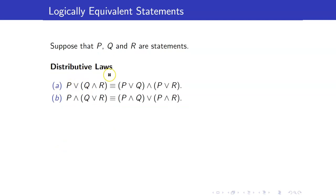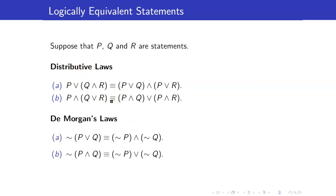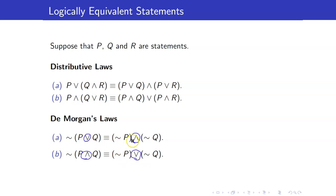We also have distributive laws, where conjunction distributes over disjunction and vice versa, analogous to multiplication and addition. Next, we have De Morgan's laws, which are very useful because they tell us how to negate a disjunction and a conjunction. To negate a disjunction, distribute the negation: not (P or Q) becomes not P and not Q — change OR to AND. Similarly, not (P and Q) becomes not P or not Q — change AND to OR. Do not forget to switch the operation.